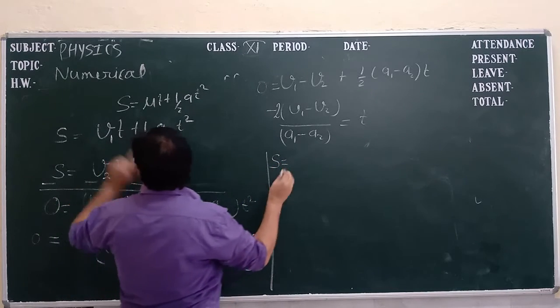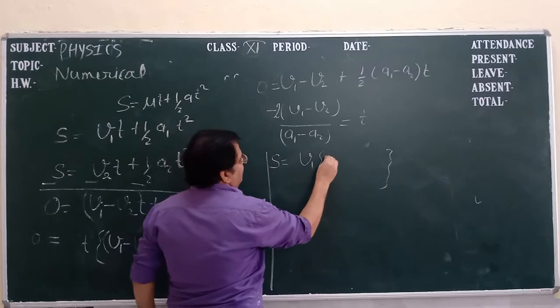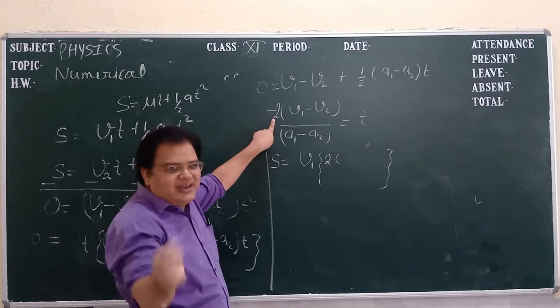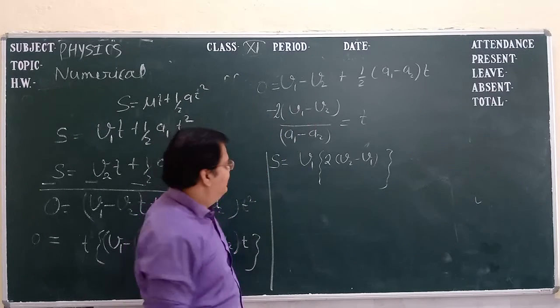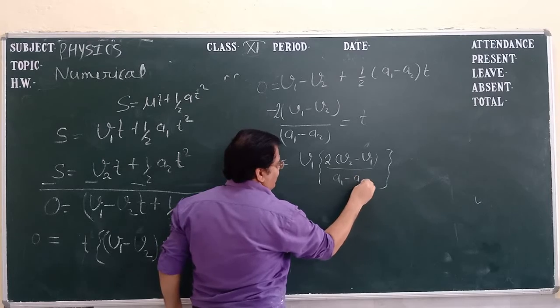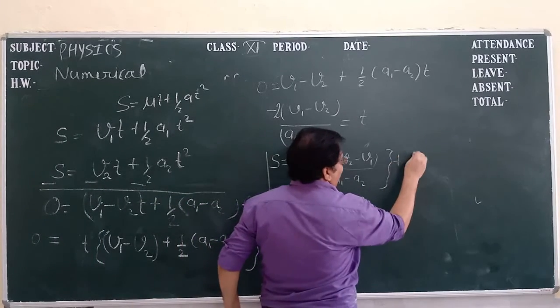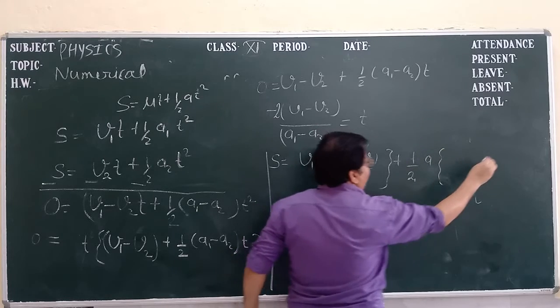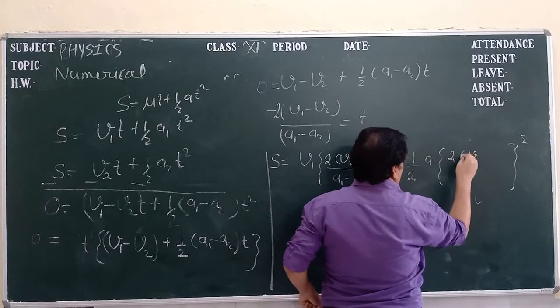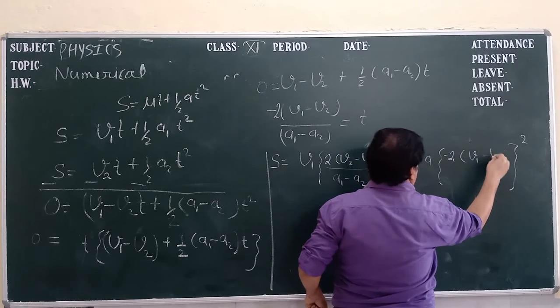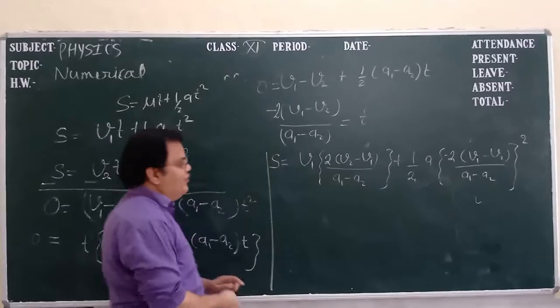So if we put the value of t in our first equation, what we get? S equal to v1 times, here is a minus so I am going to change it, v2 minus v1 upon a1 minus a2, plus 1 by 2 a1 t squared. That is 2 into v2 minus v1 upon a1 minus a2 whole square.